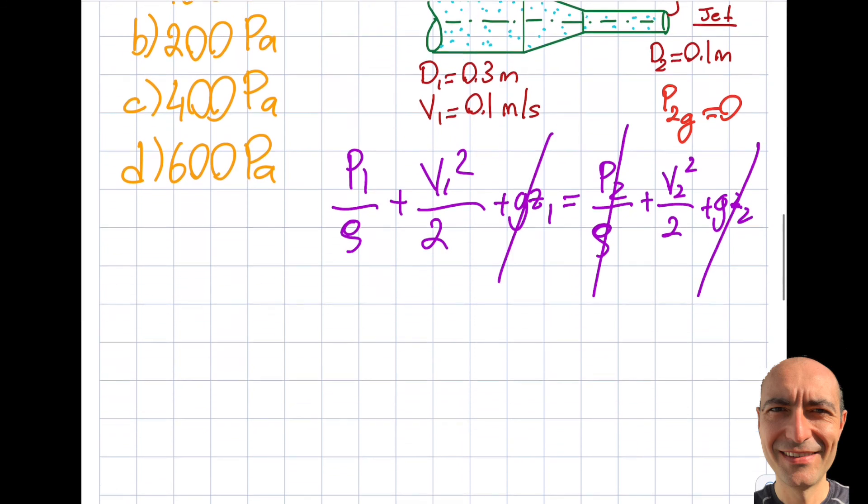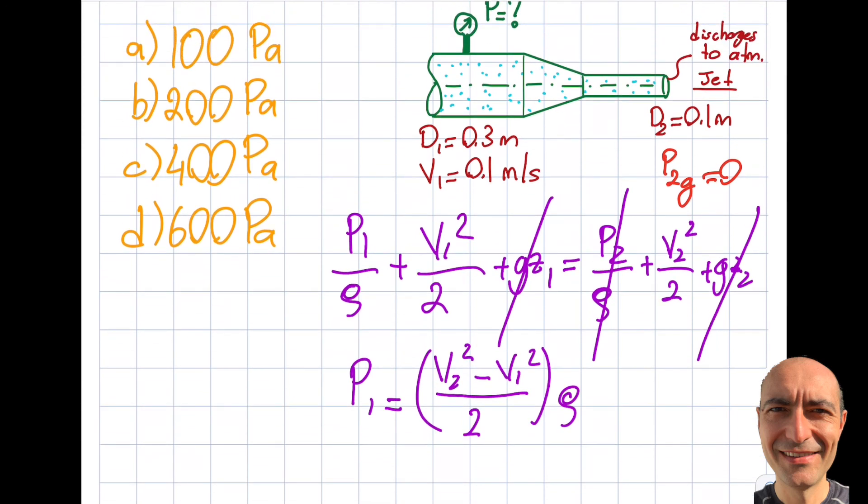If I rewrite this equation now, P1 equals (V2² - V1²) over 2 times the density. Let's look at what I know. Right now V2 is missing, V1 is known.